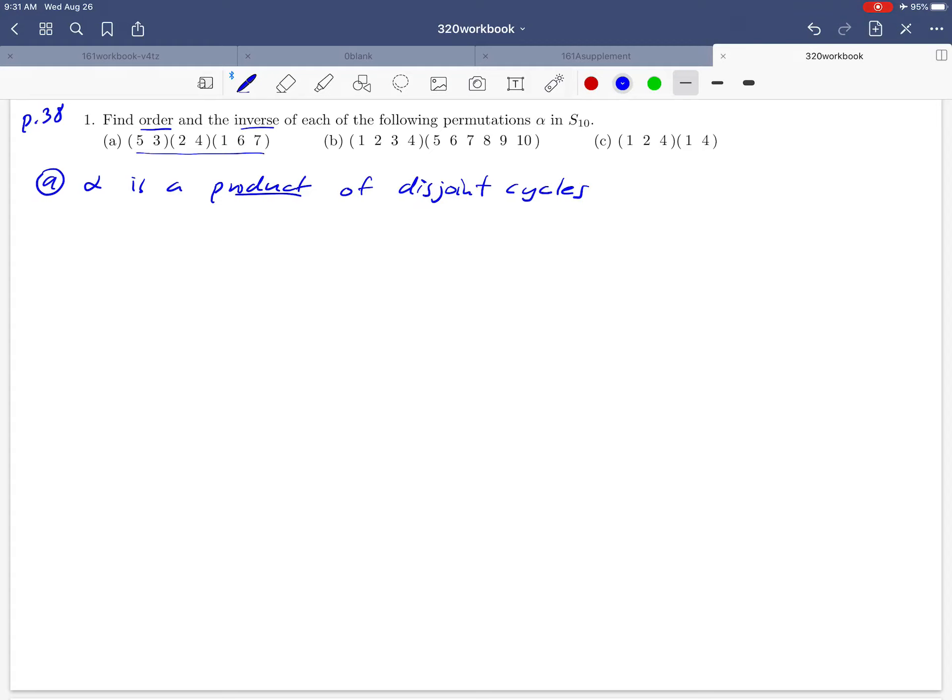Okay so let's start with the order of alpha. We have a theorem that says that if the permutation is written as a product of disjoint cycles, we can find its order by just taking the least common multiple of the cycle lengths.